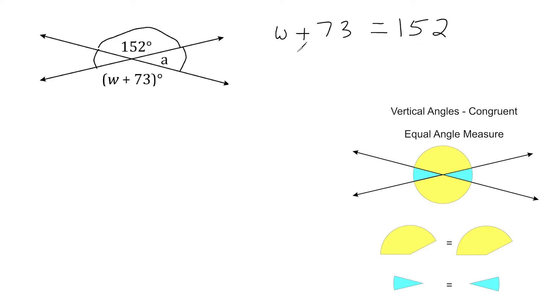So all we have to do here is subtract 73 from both sides, and 152 minus 73 is going to give us 79, and that leaves us with W. But let's understand 79 is not an angle measure. That is just the value of our variable, W. If we were to plug 79 into W and then add it to 73, that would give us 152 degrees.